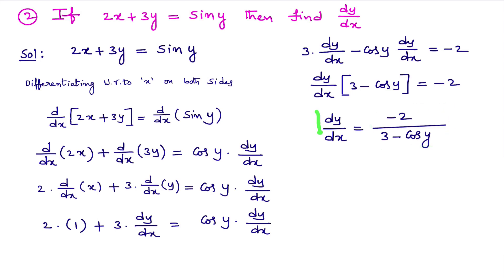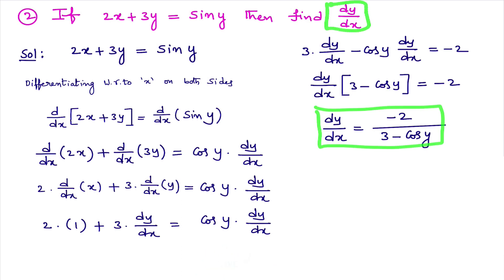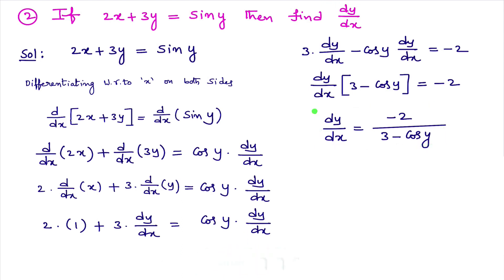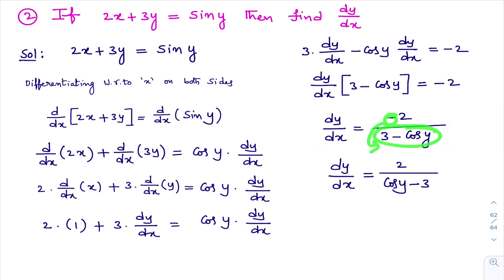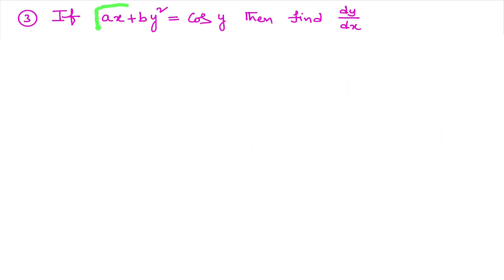We got dy/dx. Or else, if you want to simplify a little bit, you can take the minus to the denominator: 3 − cos y becomes cos y − 3. So you can also write: dy/dx = 2 / (cos y − 3).